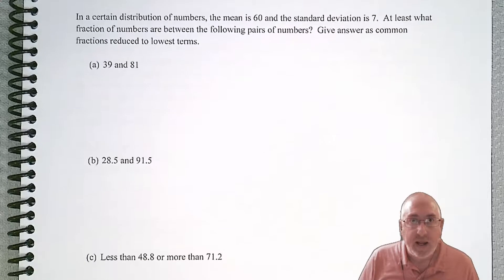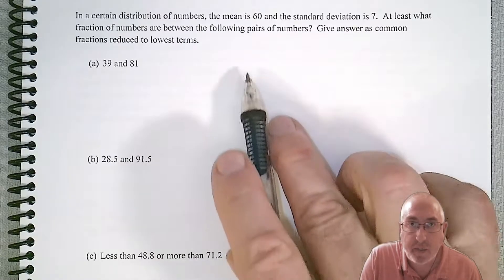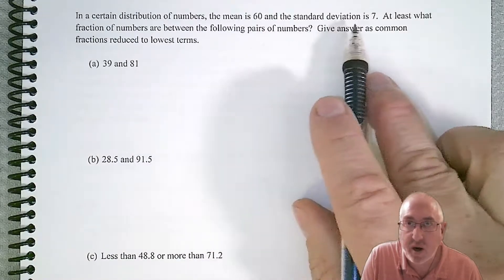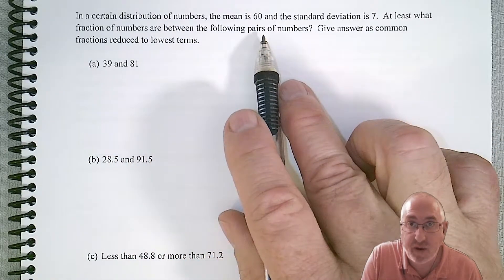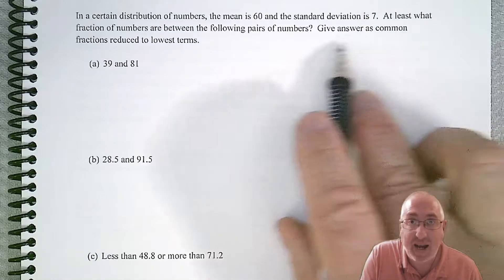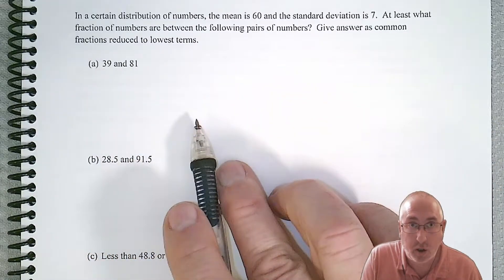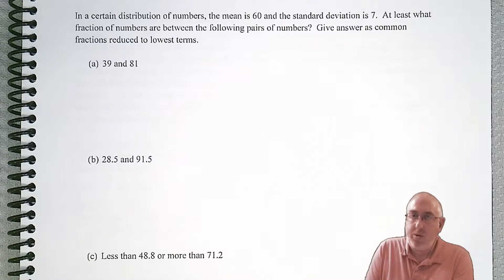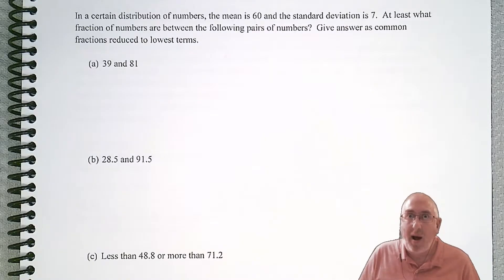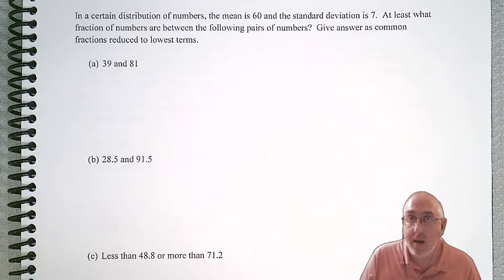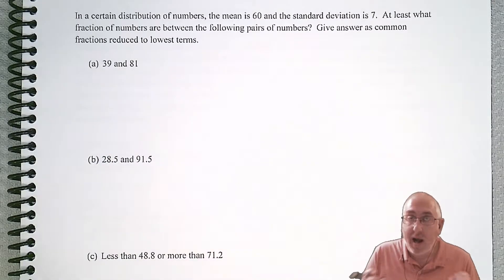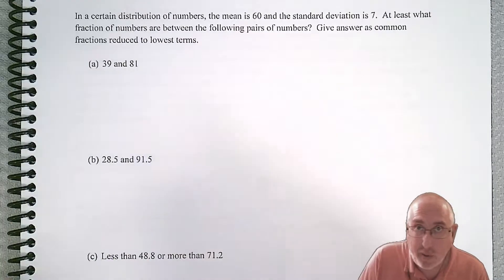In a certain distribution of numbers, the mean is 60 and the standard deviation is 7. At least what fraction of numbers are between the following pairs of numbers? Give answers as common fractions reduced to lowest terms. So this whole problem boils down to first finding out how far away are those cutoffs from the mean, and we have to translate that into a number of standard deviations, or k.